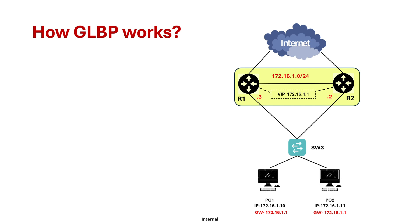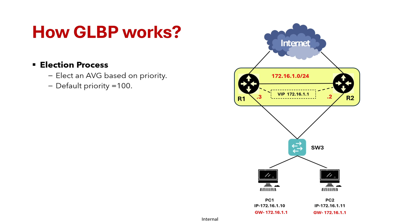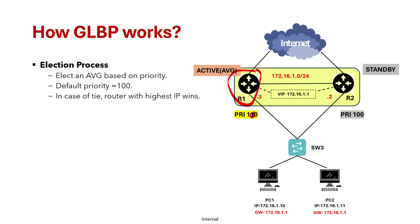The operation of GLBP starts with an election. Routers in the GLBP group elect an AVG first, based on priority. By default, the priority is 100. Here, R1 has priority 110 and R2 has priority 100, so R1 becomes the active AVG. If priorities are equal, the router with the highest IP address wins. To avoid an undesired election outcome, you can configure a higher priority on the router you prefer to be the active AVG.